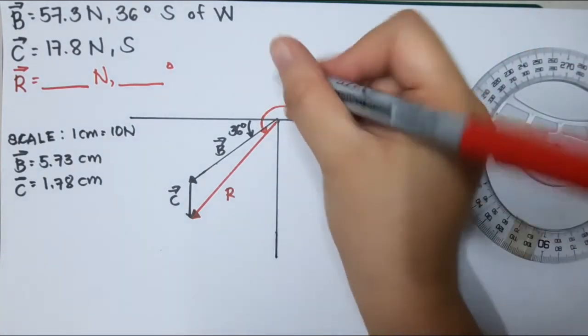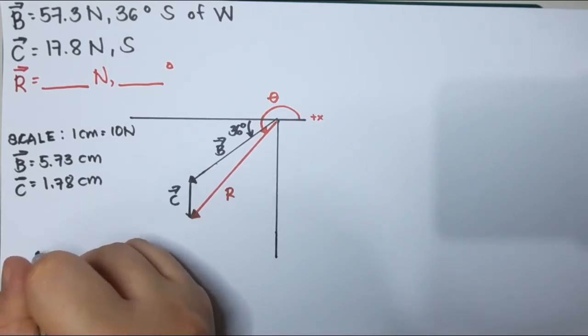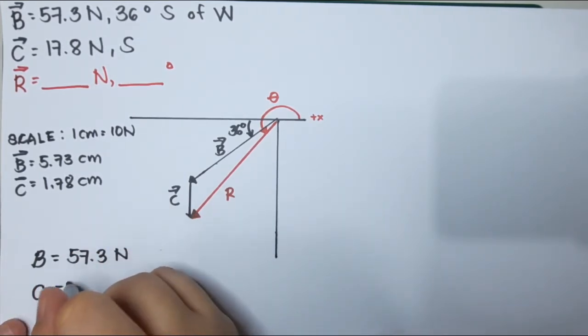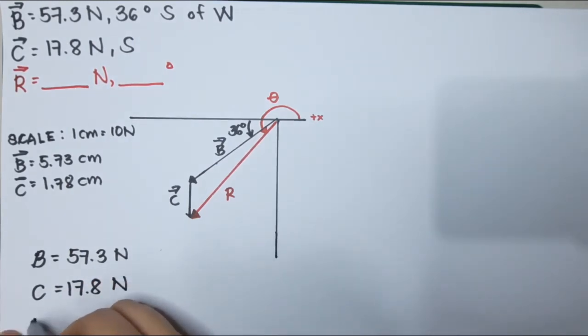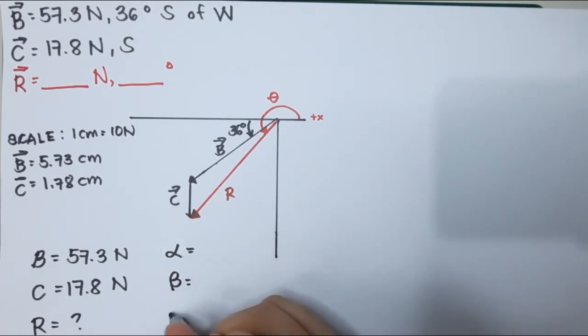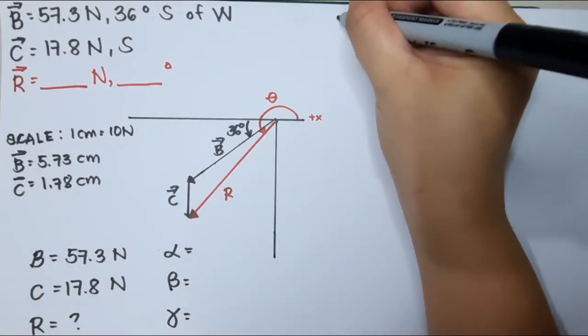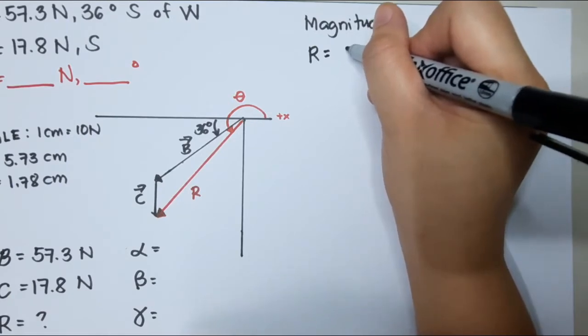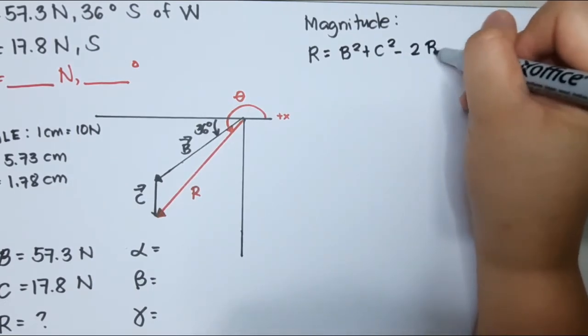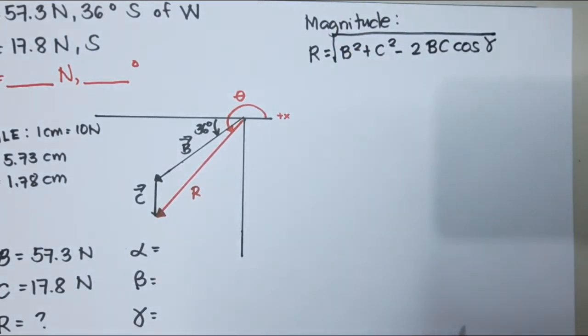Here I have vector B which is 57.3 Newton, vector C is 17.8 Newton. We're looking for R, then alpha, beta, and gamma. To find the magnitude we will use cosine method to find R. That is B squared plus C squared minus 2BC cosine gamma, square root of that. It means I have to know the given B, C, and gamma.